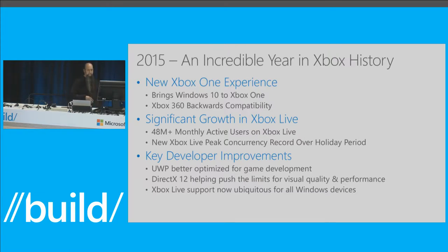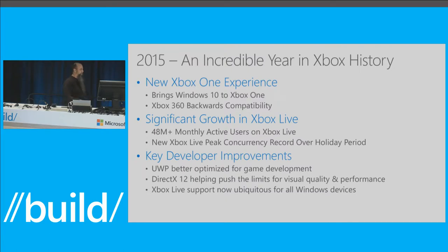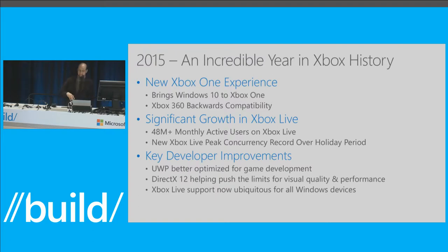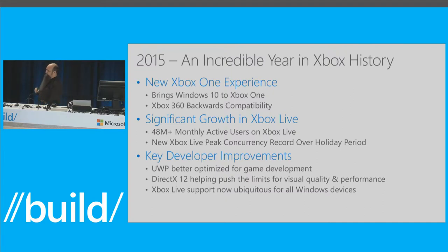From the developer's perspective, we've made a lot of key improvements last year. We've made UWP much better optimized for the needs of game development, since game development is fundamentally different than writing a social app or line of business app. With DirectX 12, we're pushing the limits of visual quality and fidelity across all devices in the ecosystem. And Xbox Live support is now ubiquitous across all Windows devices, ensuring it's always available to you as a developer.